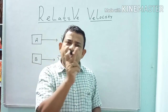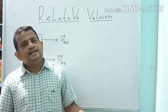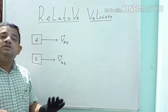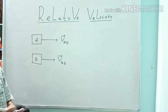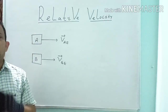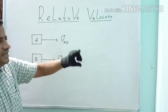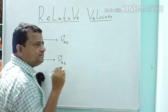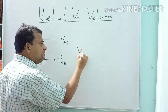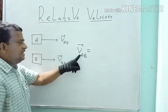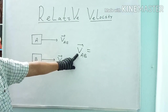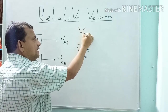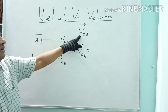Velocity of one body with respect to another body is called relative velocity. Suppose I say velocity of A with respect to B, or velocity of B with respect to A — that is your relative velocity. Relative means velocity of one with respect to the other. VAB subscript means velocity of A with respect to B. VBA means velocity of B with respect to A.